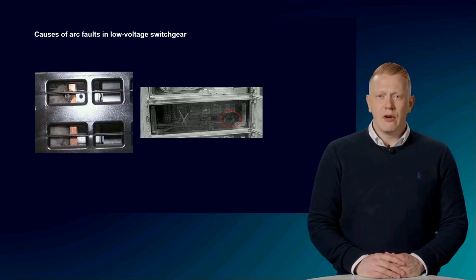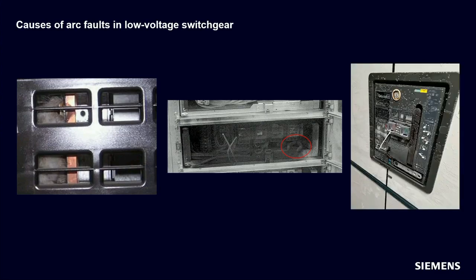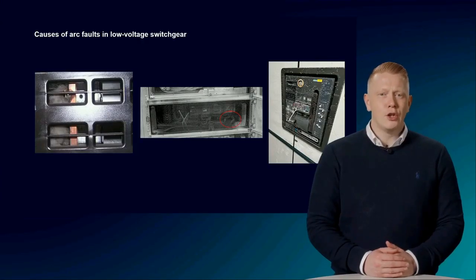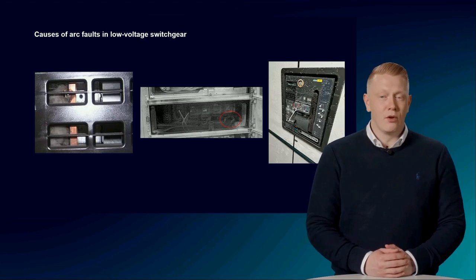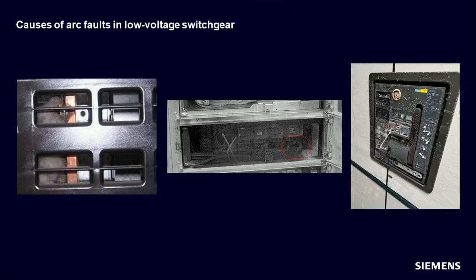Handling errors are also a possible source of risk — for example, incorrectly carried out maintenance work or non-compliance with the environmental conditions for which the system is designed, like a system that stood in a building without windows and heating and became iced over. Errors in planning also pose a further risk, for example due to incorrect dimensioning of equipment or cables, which in an extreme case can lead to overload, failure, and short circuit.